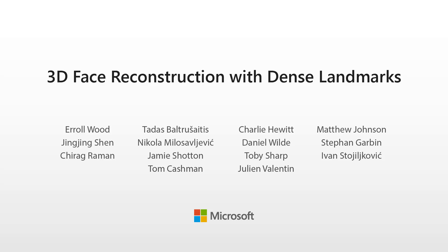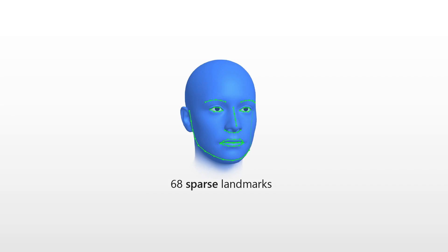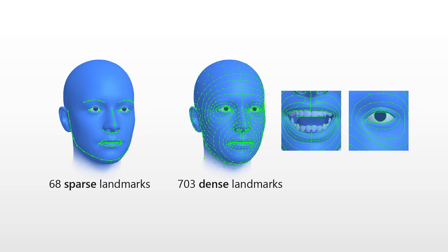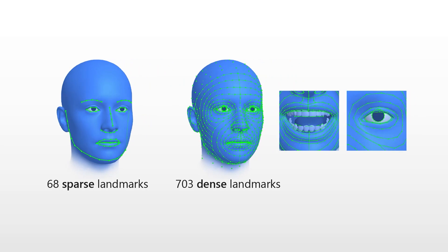In this work, we will show you that dense landmarks are all you need for accurate, robust, and efficient 3D face reconstruction in the wild. Landmarks often play a key role in face analysis, but many aspects of identity or expression cannot be represented by a typical set of 68 landmarks alone. We present the first method that accurately predicts 10 times as many landmarks as usual, covering the whole head, including the eyes and teeth.